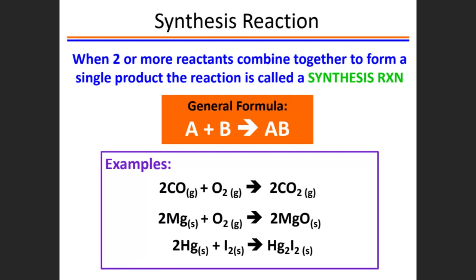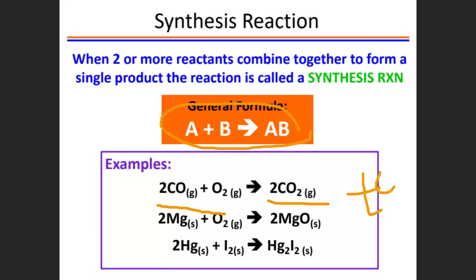We saw double displacement reaction, then combustion reaction. Finally, synthesis or combination reaction: the general formula is A + B → AB. When you see two reactants combining into one product, this is mostly a combination reaction. Two or more reactants combine to make a new single product. Examples: carbon monoxide + oxygen → carbon dioxide; magnesium + oxygen → magnesium oxide; mercury + iodide → mercury iodide.